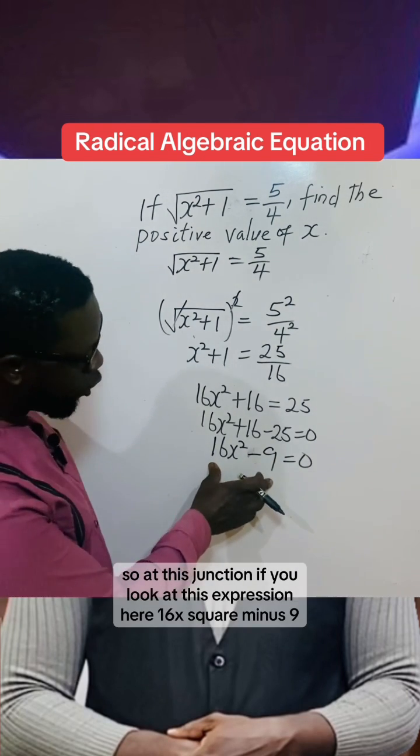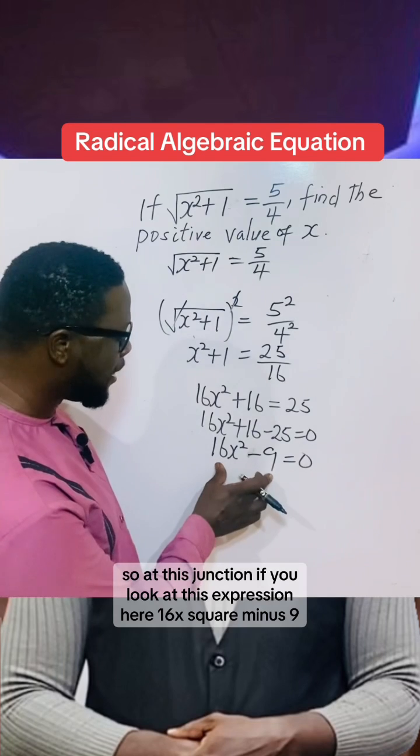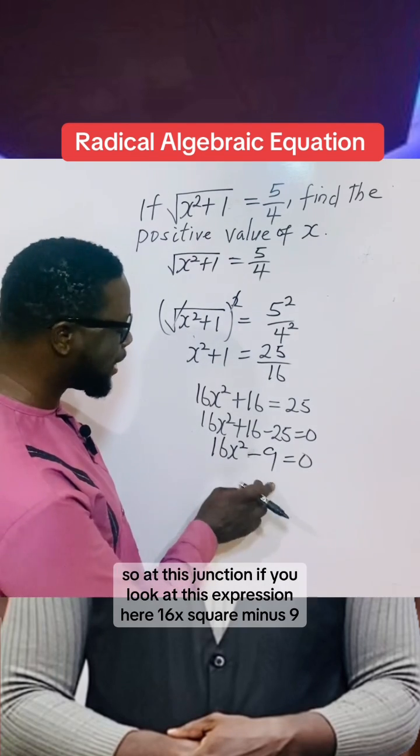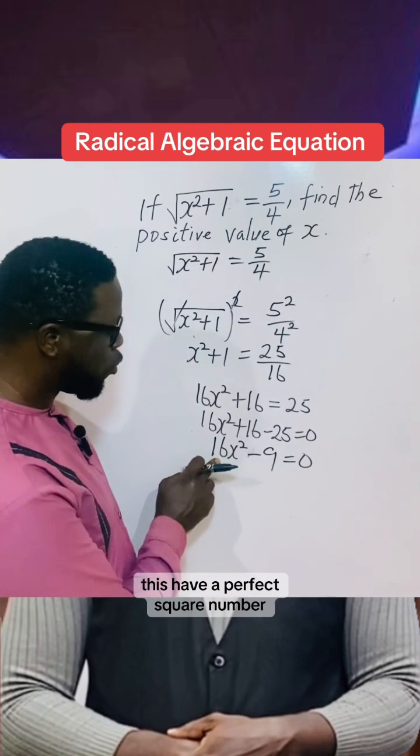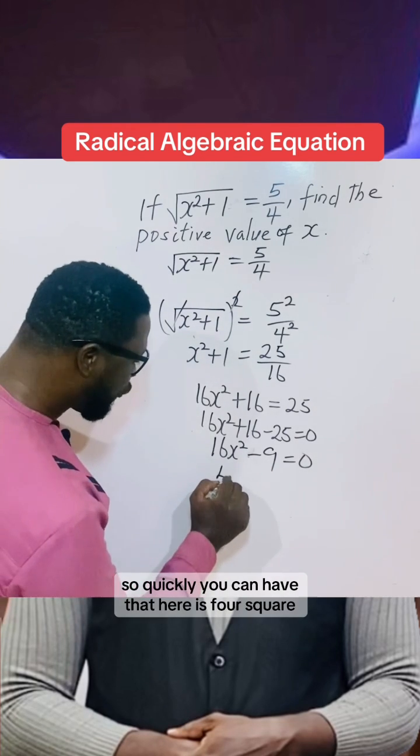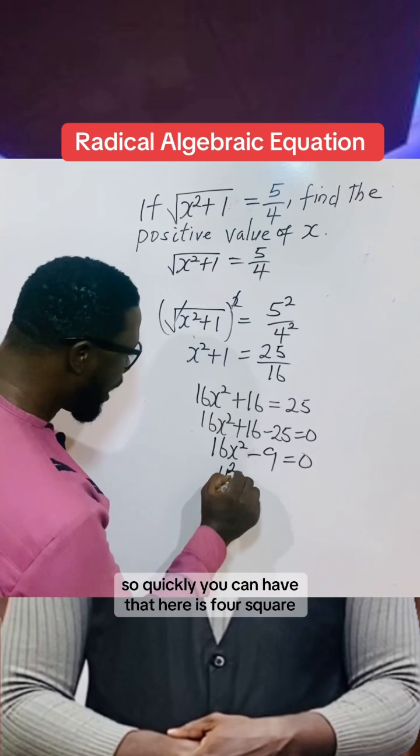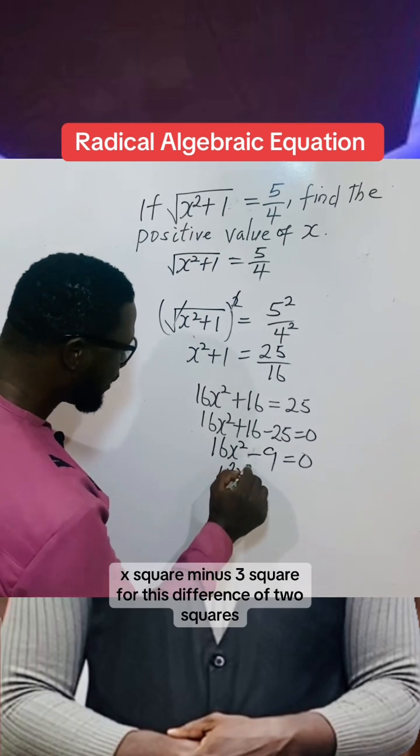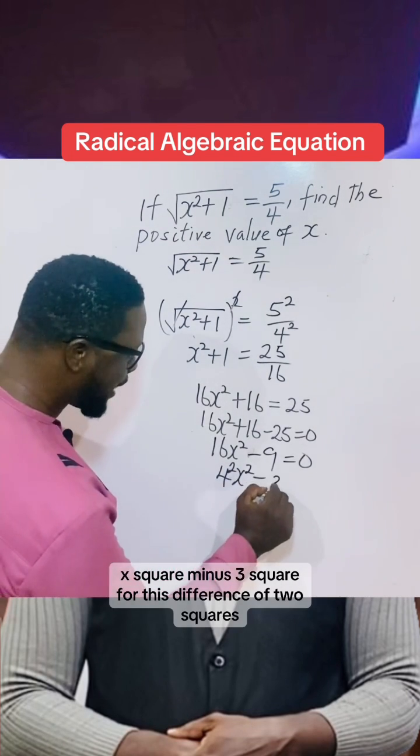At this junction, if you look at this expression 16x² - 9, this has perfect square numbers. So quickly, you can have that here is (4x)² - 3².